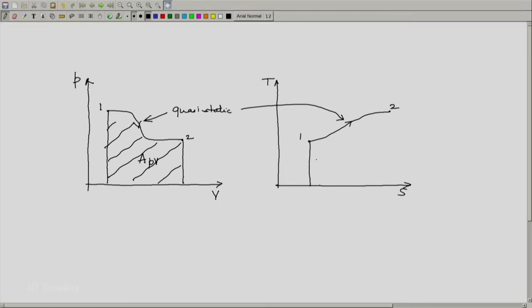Similarly, because the process is quasi-static and we can define the area properly, let this area on the TS diagram be computed and let me call this area ATS. The question is what do these areas represent?